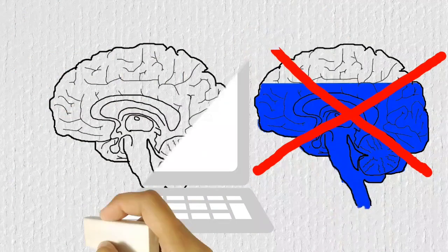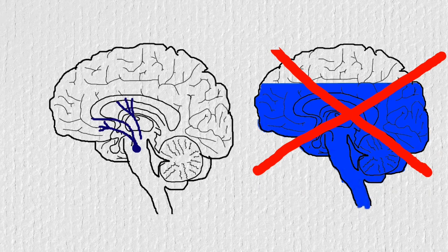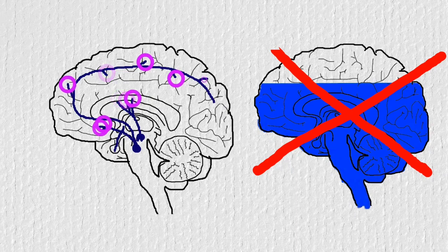Dopamine, for example, isn't just everywhere. It is produced in a few places and transported to other brain regions via pathways, where it finally is released and triggers other neurons in those regions.